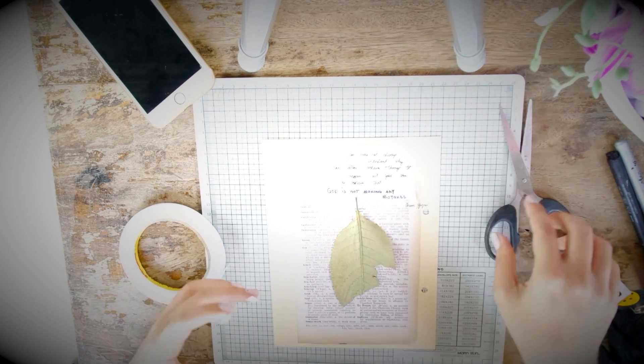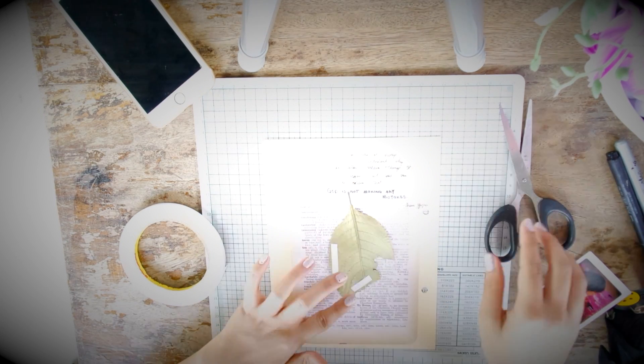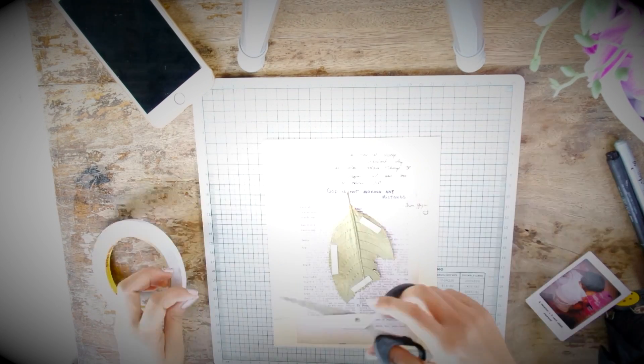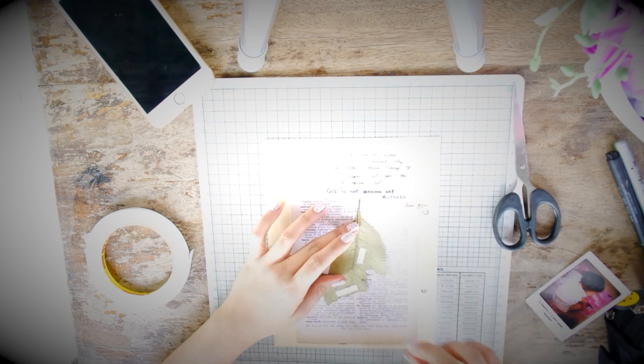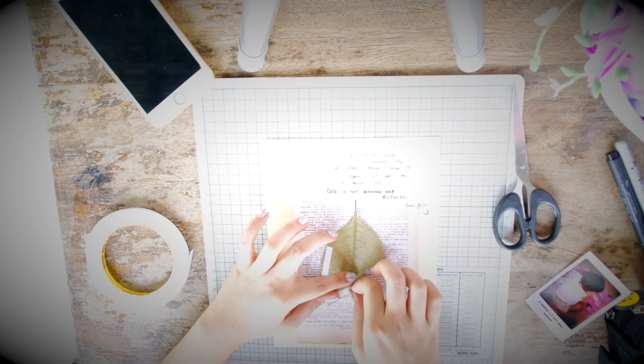I found this leaf on our porch and I just love the torn edges. I thought it would be so cute in my journal. I will secure it down with double-sided tape and attach it on the upper left side of my page.